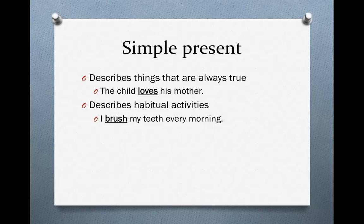The simple present has two meanings. First, it can describe things that are always true — as in, the child loves his mother. He loved his mother yesterday, he loves her today, and he will love her tomorrow. This will never change; it is always true. Please pay attention to the subject and the verb. It's a singular subject, child, so the verb is also singular, which means we add an S: loves.